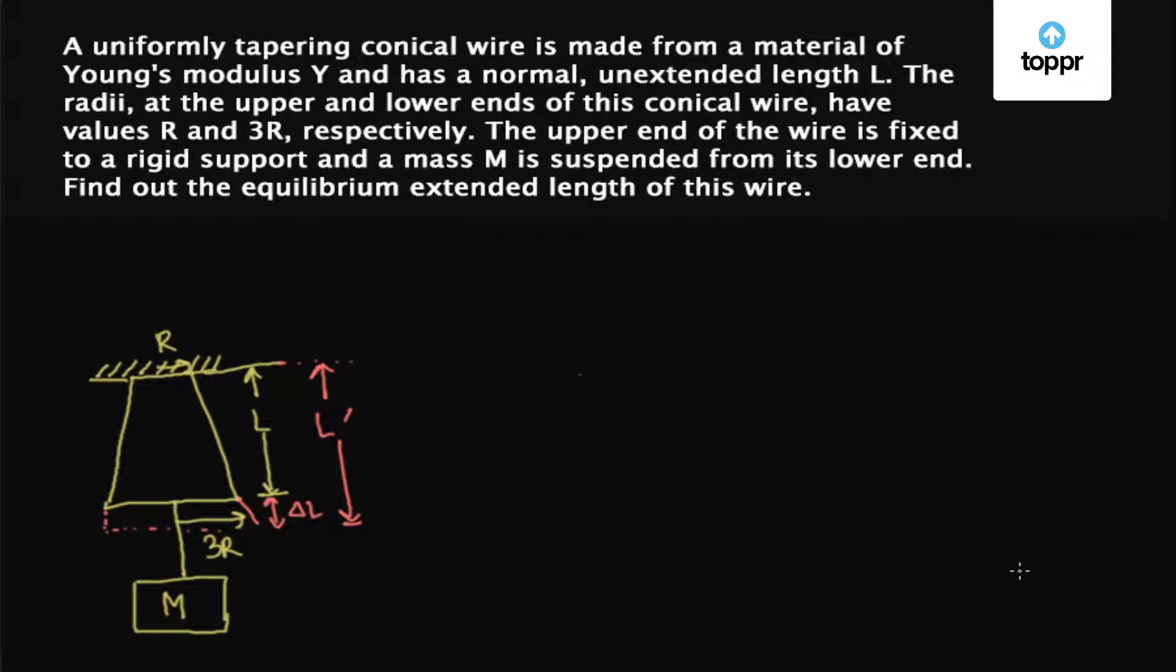Now to solve this question, we take an element from the wire at a distance X having thickness DX and radius of the cross section R.